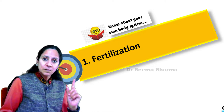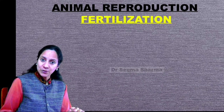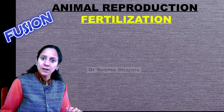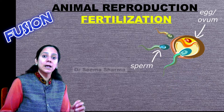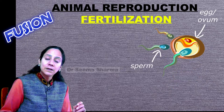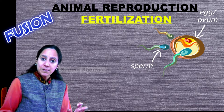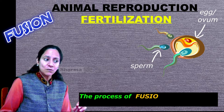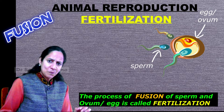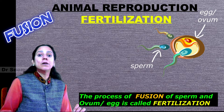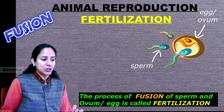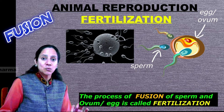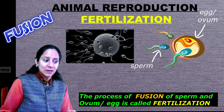Fertilization. The first step in the process of reproduction is the fusion of sperm and egg. Sperm and egg are the male and female reproductive cells, and the process of fusion of sperm and ovum is called fertilization. Both these pictures are depicting the sequence of fertilization.